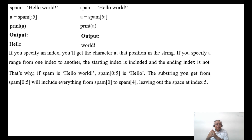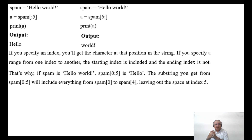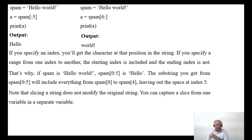That's why if spam is 'hello world', spam[0:5] is 'hello' only. The substring from 0 to 5 includes everything from spam[0] to spam[4], leaving out the space at index 5.